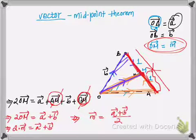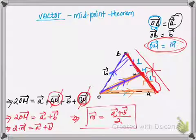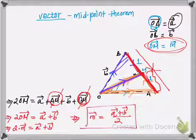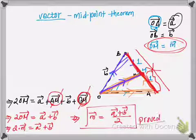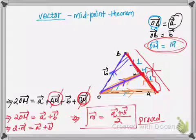Finally, vector m is equal to vector a plus vector b divided by two. This is what we have to prove in the midpoint theorem of vector geometry. I hope it is clear to you whatever I have said in this tutorial.